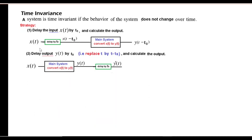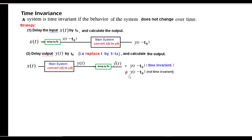In the second step, we do the opposite: first pass x(t) through the system to get y(t), then pass it through a delay circuit to get y'(t). If y'(t) equals y(t-t0), the system is time invariant — there has been no change in the output from changing the position of the systems. If they are not the same, the system is not time invariant, meaning it varies with time.